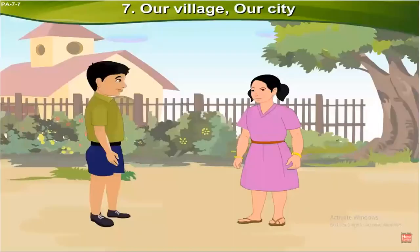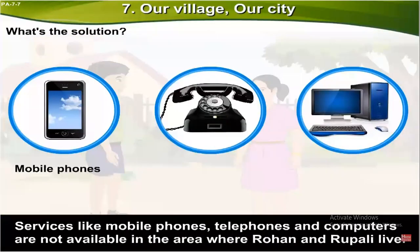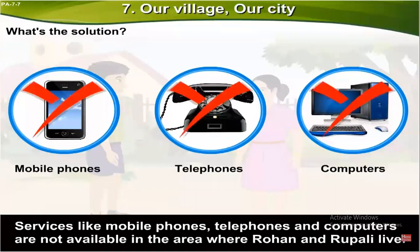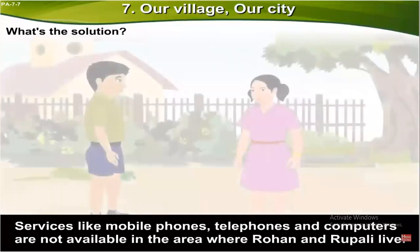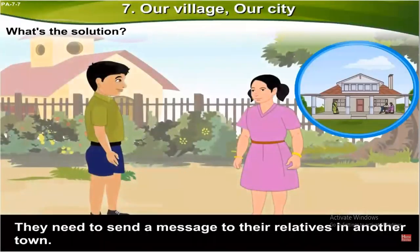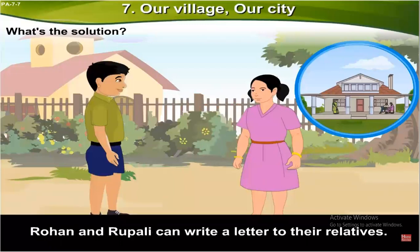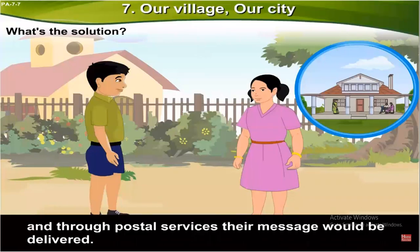What's the solution? Services like mobile phones, telephones, and computers are not available in the area where Rohan and Rupali live. They need to send a message to their relatives in another town. How will you help them? Rohan and Rupali can write a letter to their relatives, and through postal services their message would be delivered.